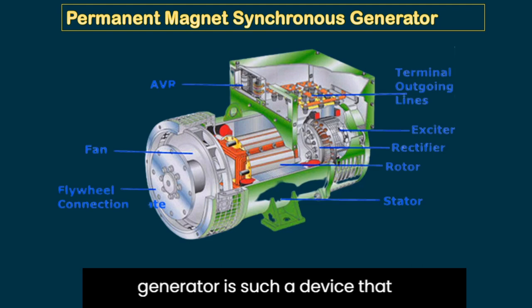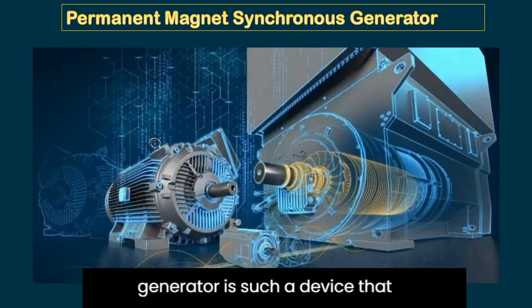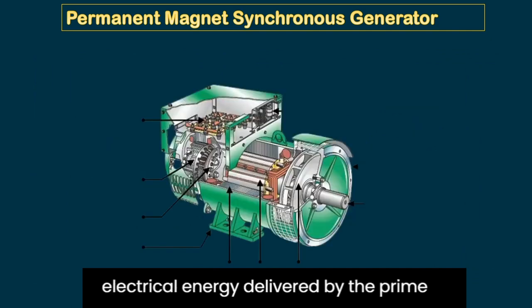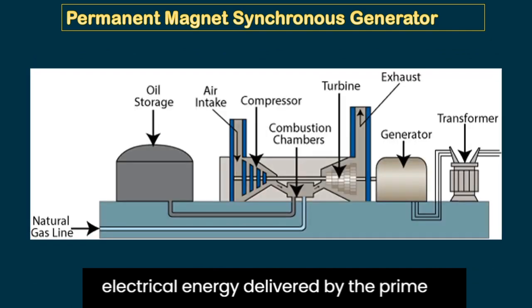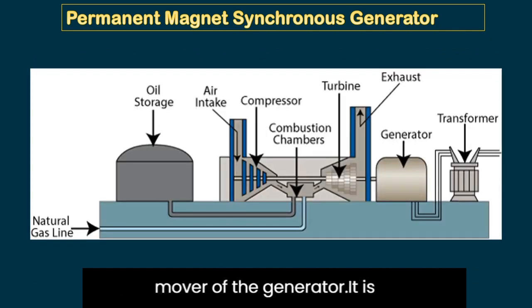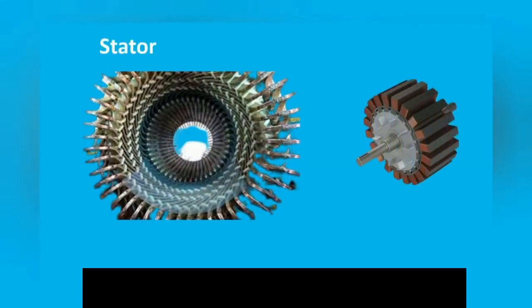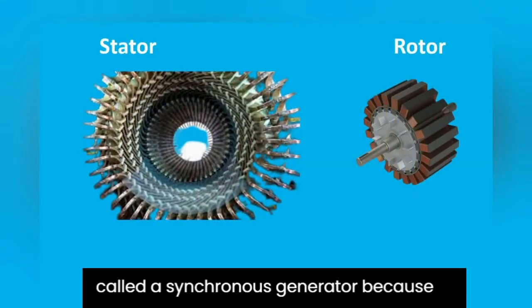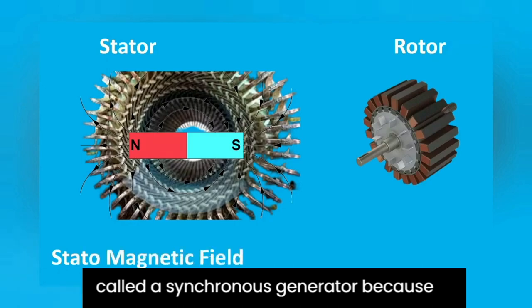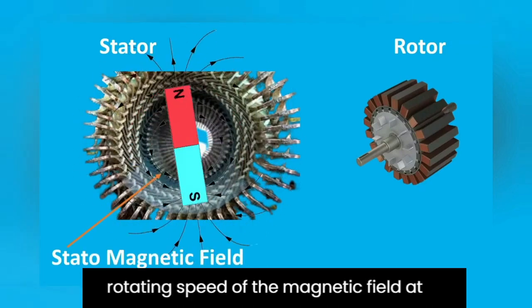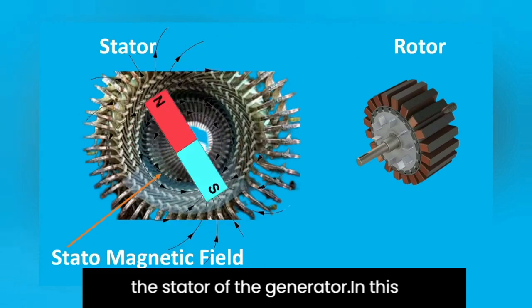The synchronous generator is a device that transforms mechanical energy into electrical energy, delivered by the prime mover of the generator. It is also known as an alternator. It is called a synchronous generator because its rotation speed is equal to the rotating speed of the magnetic field at the stator of the generator.